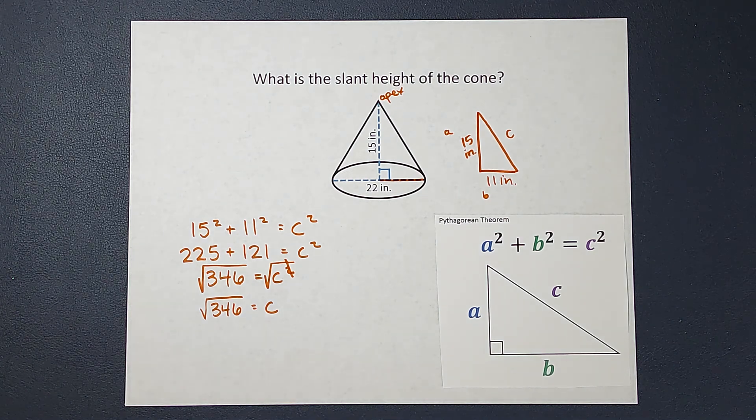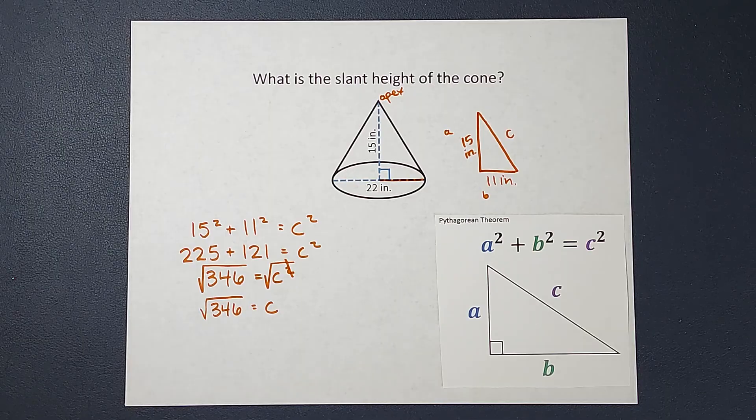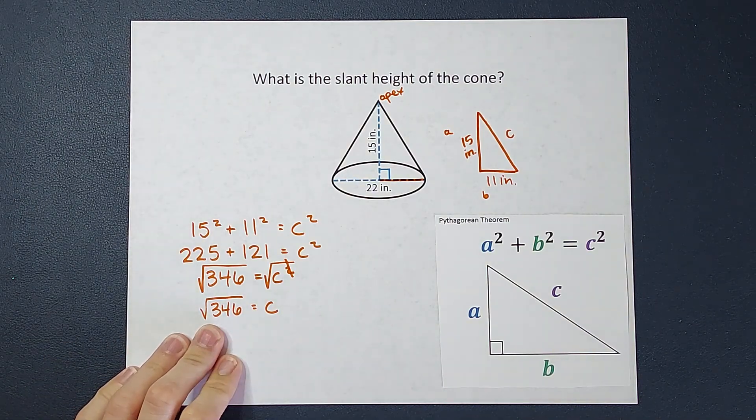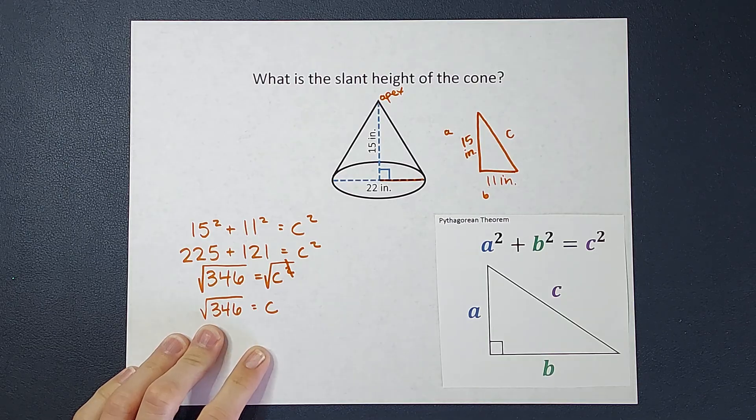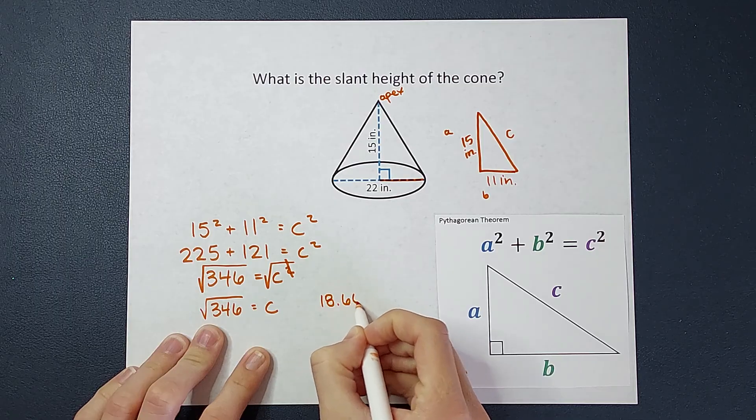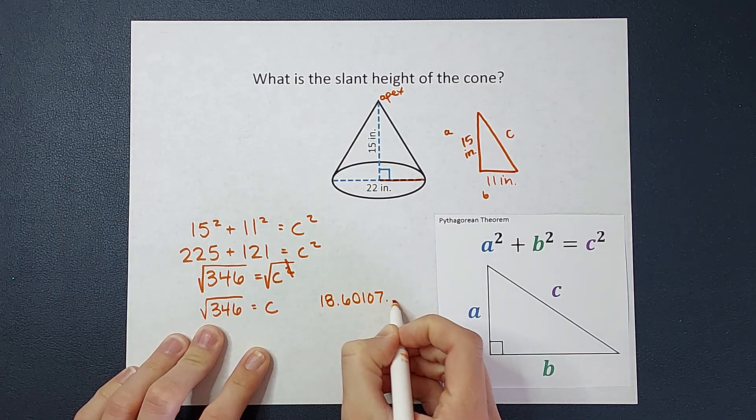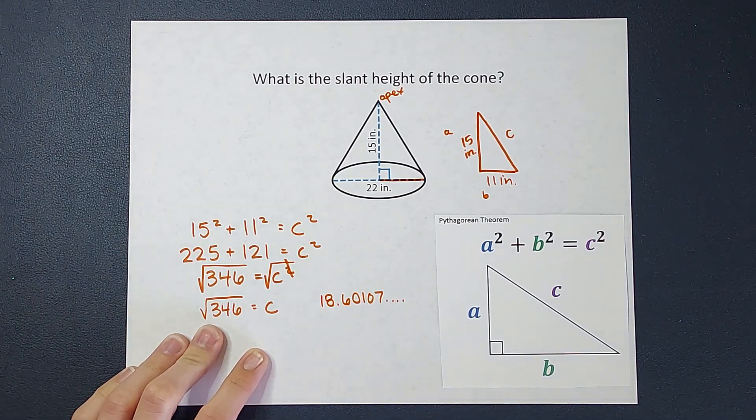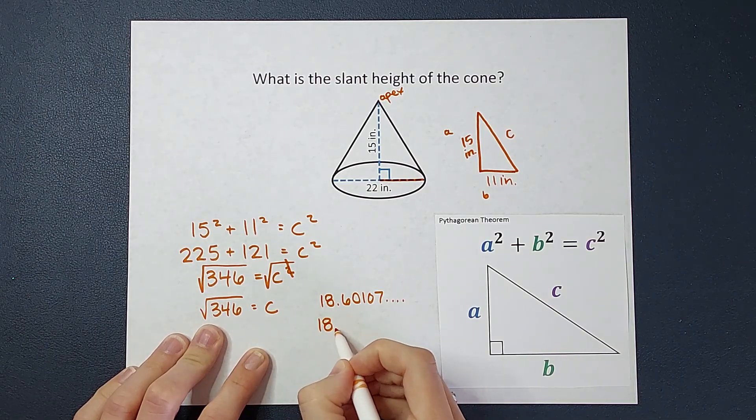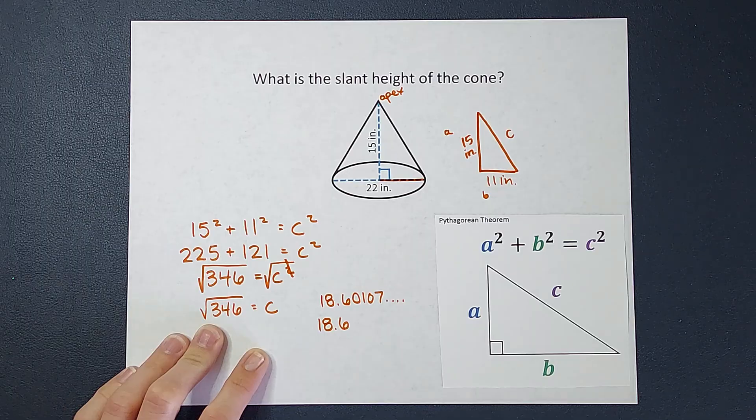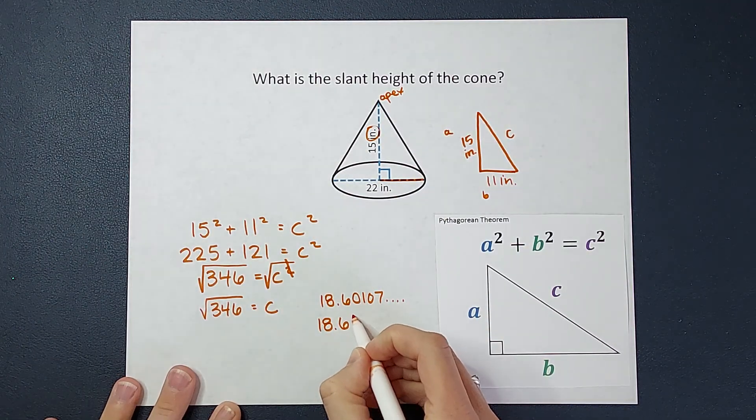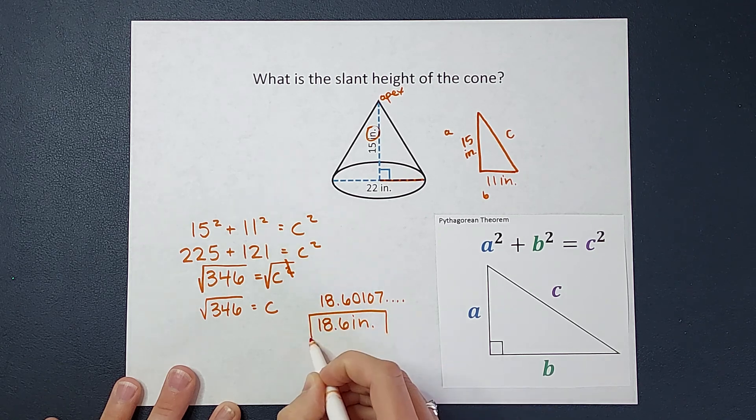Also, because we are doing a length, I feel pretty good about putting this in decimal form. So when you plug in the square root of 346 into your calculator, you get 18.60107, and it keeps going. So I'm going to go ahead and round that to 18.6. And what were we in? Inches.